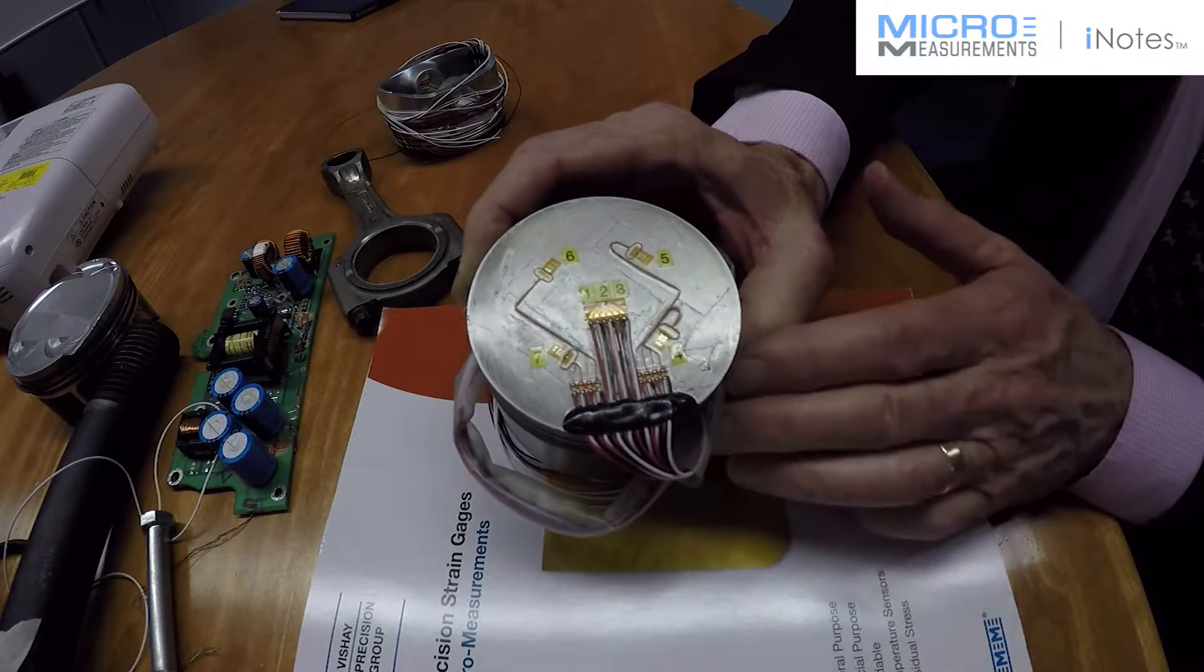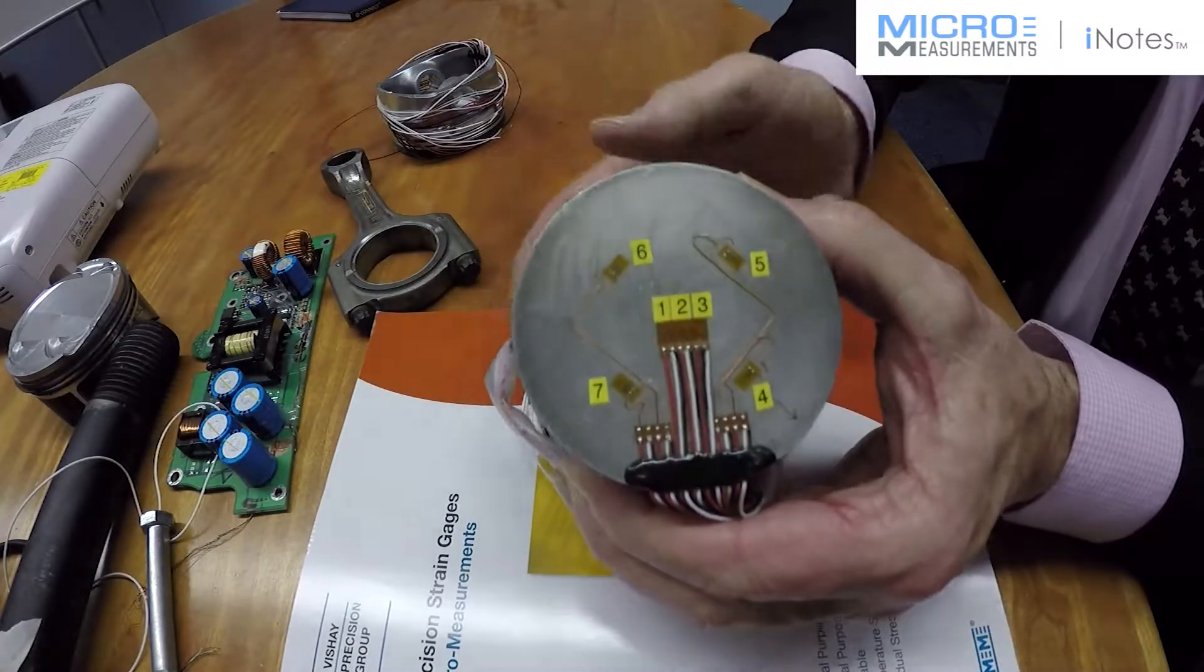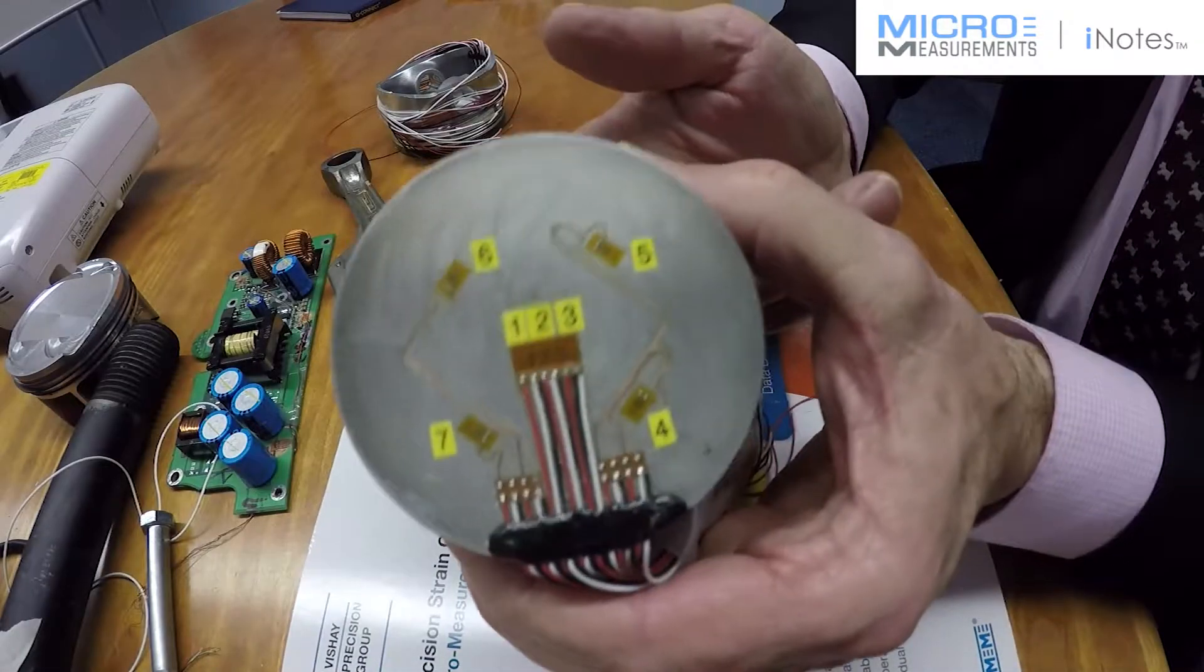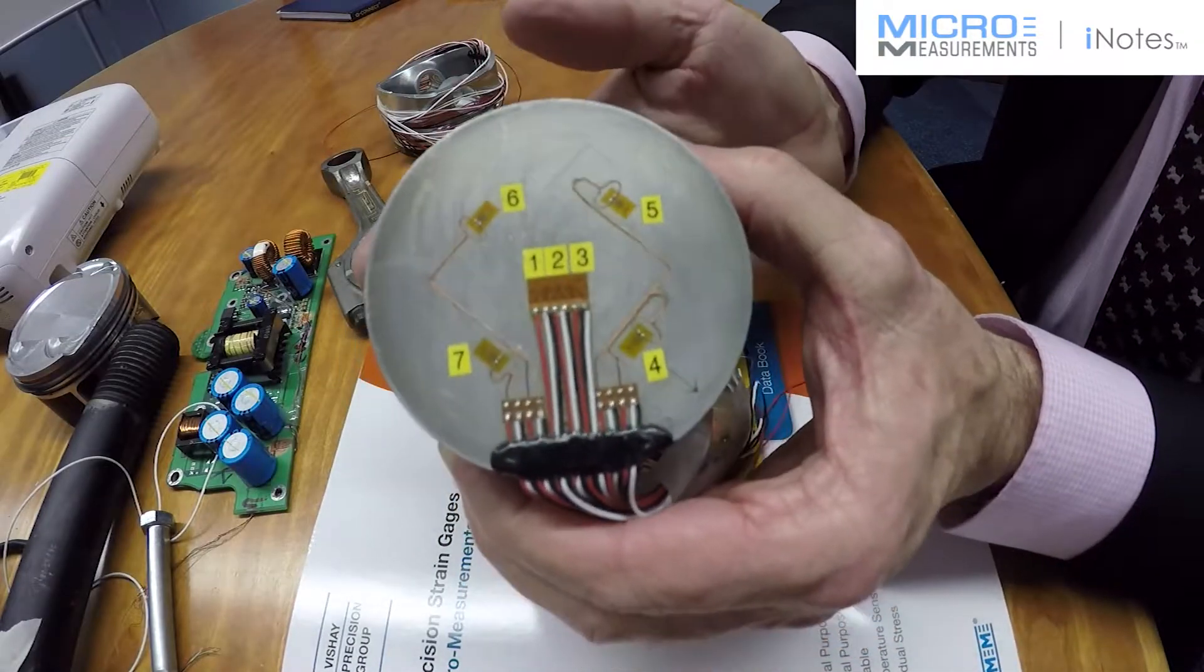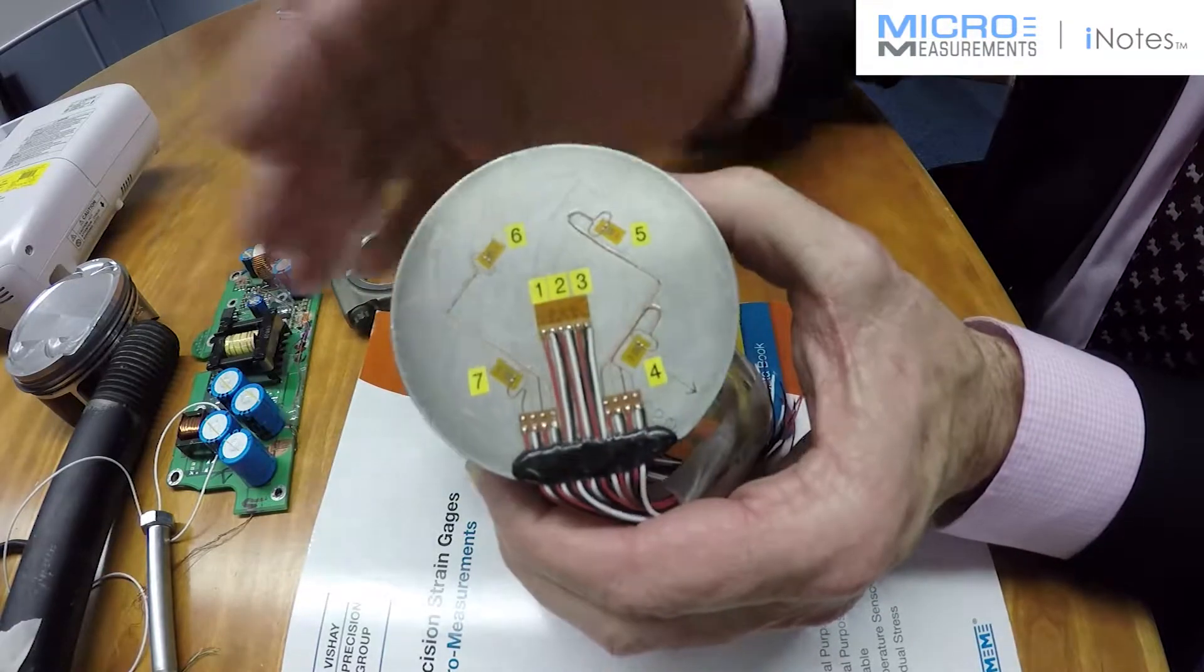This piston was not used in service but was water pressurized from below. That would make the piston go into a dome shape, if you can imagine that across the top of there.